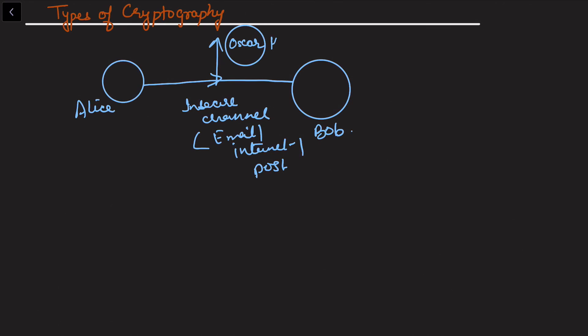Oscar is the one which we call a cryptanalyst, or we can simply call this a hacker who hacks this information. Now Alice wants to share some information with Bob. In that sharing of information, we have discussed that there are two types of major cryptography that we can discuss: one is symmetric and the other is asymmetric.